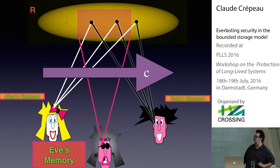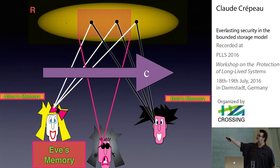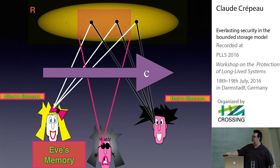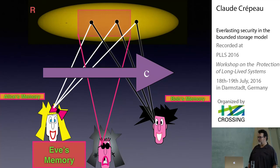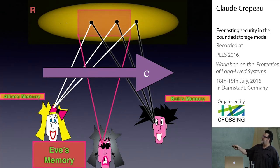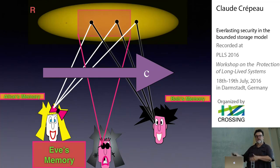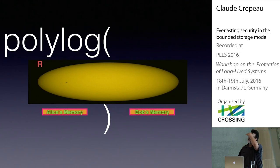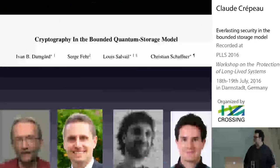In the general model, we allow Eve to look at some bits, compute something, look at more bits, and compute more — bounding only her memory. The extra constraint the authors suggest is that if Eve is restricted to reading the source, storing that, and then doing whatever she wants, one can also prove security in that setting and end up with polylogarithmic memory for Alice and Bob that guarantees essentially the same features.